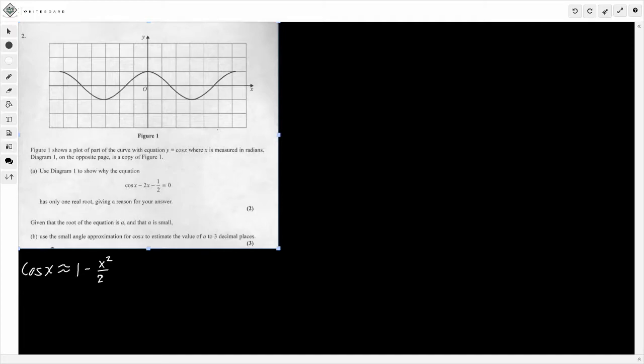So, let's do part A first. Well, we've got the graph here of y equals cos x, where x is measured in radians. We're then given the equation cos x minus 2x minus 1 half equals 0. Notice we have two parts here. We have cos x, and we have this 2x minus 1 half.